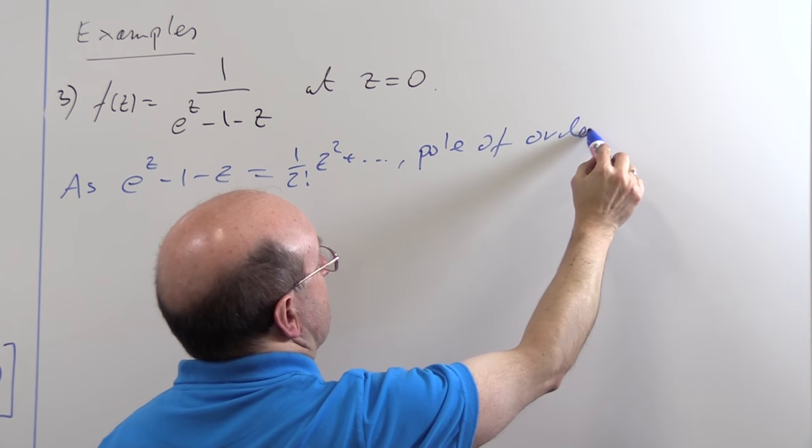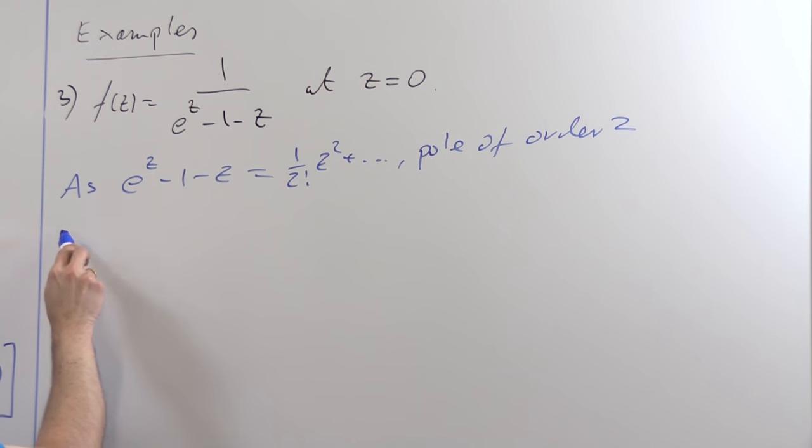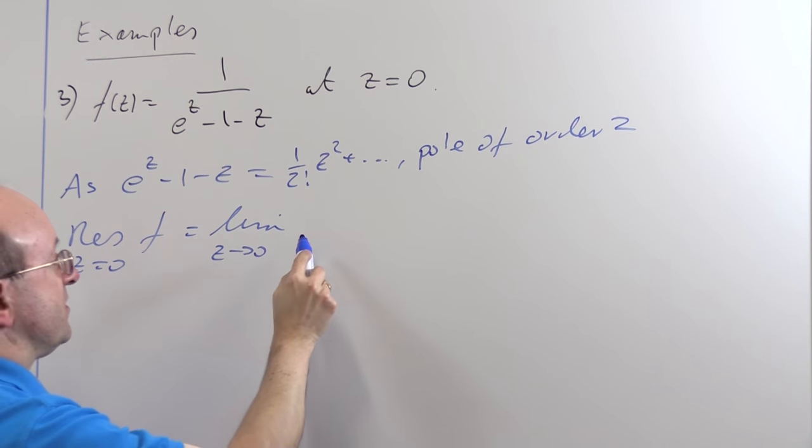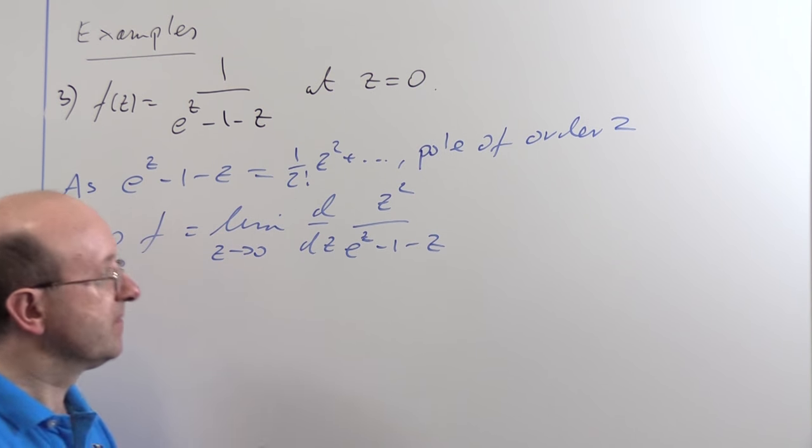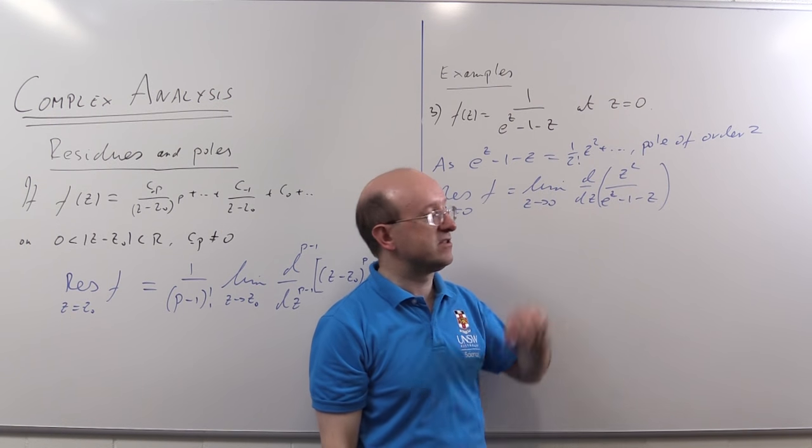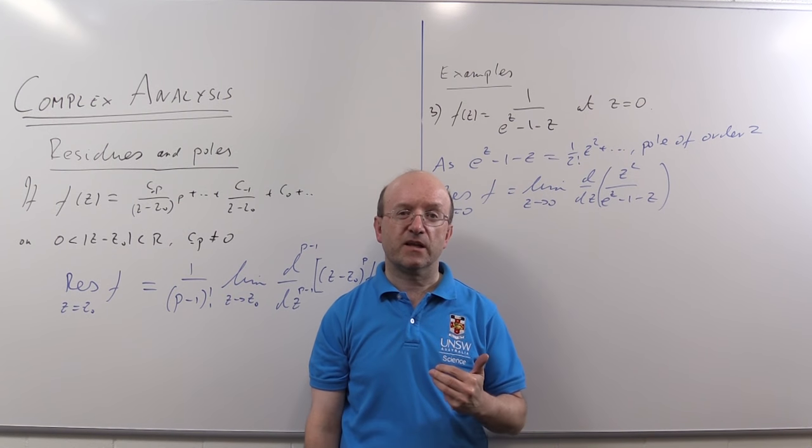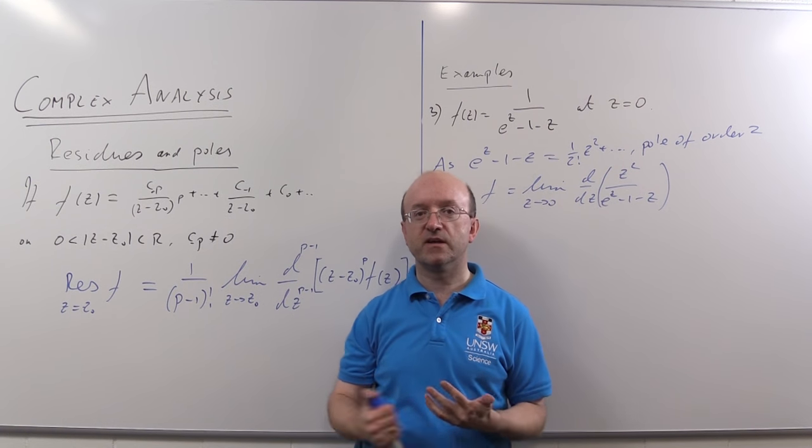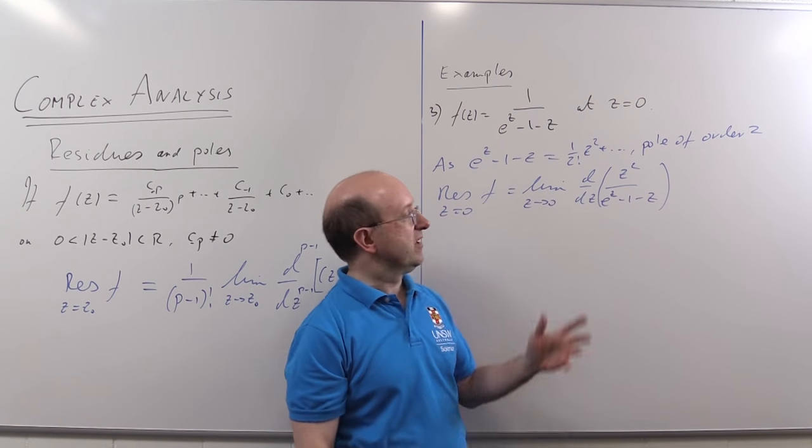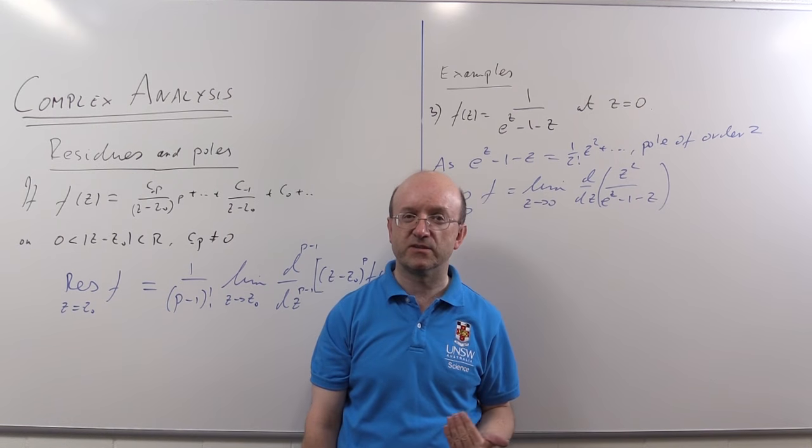So, a pole of order 2 at Z equals 0. So if we were to use the formula here, we'd have to write the residue at Z equals 0, and this function F is the limit at Z equals 0, D by DZ, Z squared over E to the Z minus 1 minus Z. So, we'd have to differentiate this quotient. Not very pleasant. And the only way we could then find the limit would be to use L'Hopital. Well, in fact, I've tried this out, and you need to go through four terms of L'Hopital to get this limit out. And that's far too much work really. I mean, the whole purpose of the game is to find these residues without doing any more work than you need to.